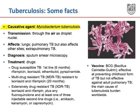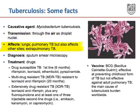Tuberculosis is caused by the bacterium Mycobacterium tuberculosis. Transmission occurs via the air when an actively infected person coughs or sneezes. The disease will most commonly affect the lungs, causing pulmonary TB.